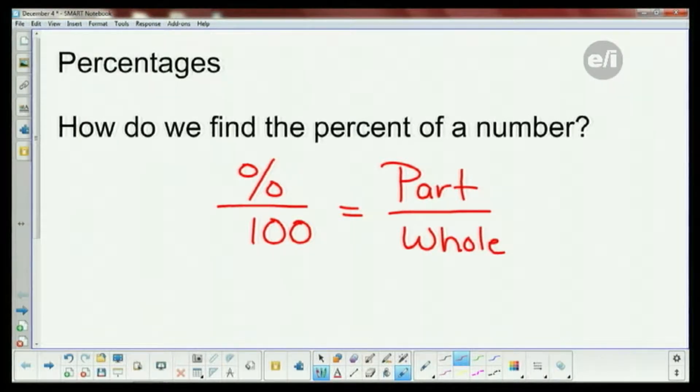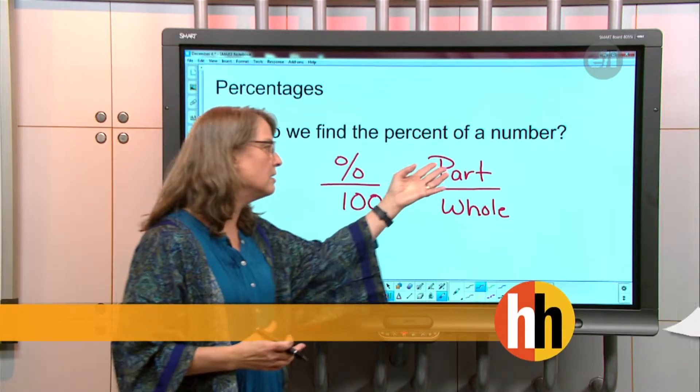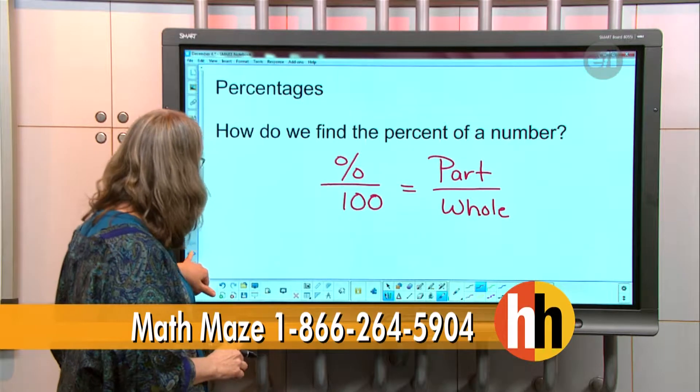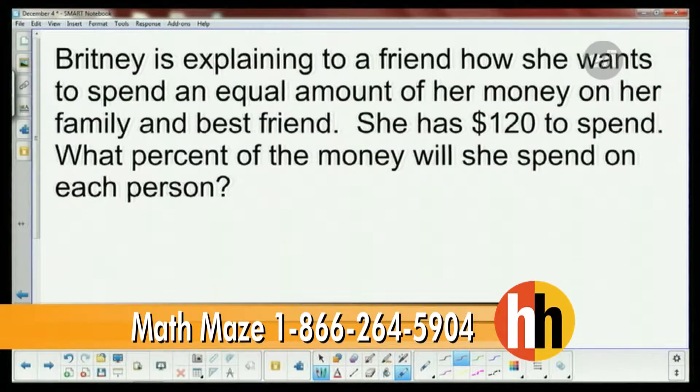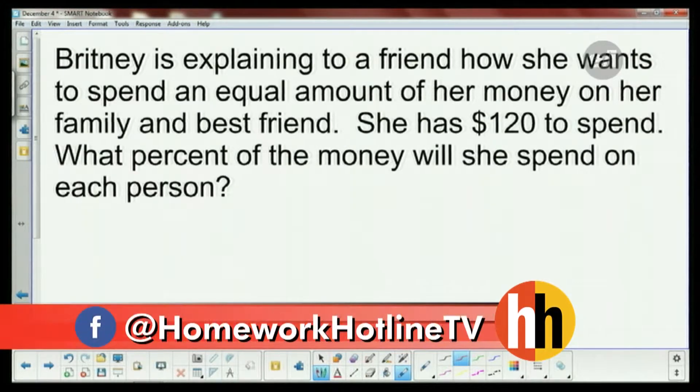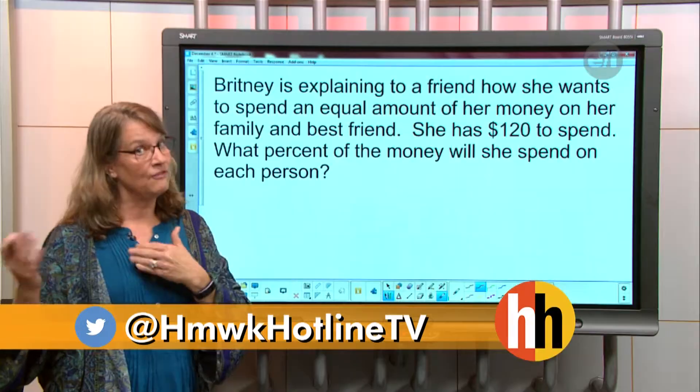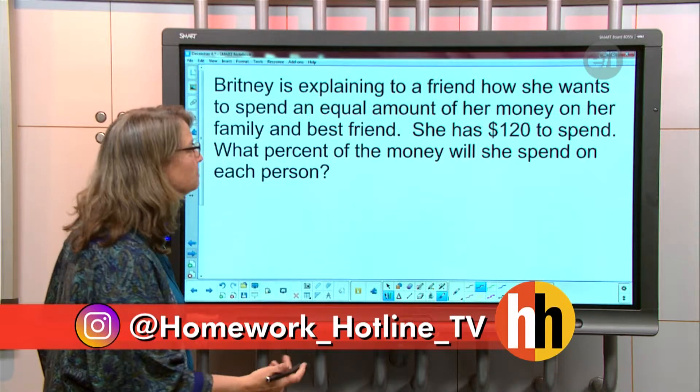In Laura's situation, the whole is the $120 that she has saved. The part is how much she's gonna spend on each of these people. Britney is explaining to a friend how she wants to spend an equal amount of her money on her family and best friend. She has $120 to spend. What percent of the money will she spend on each person?